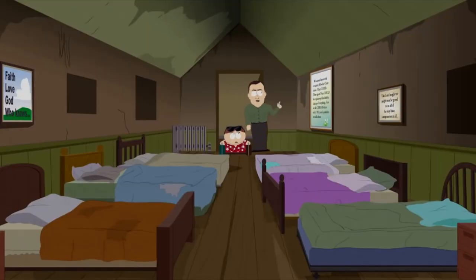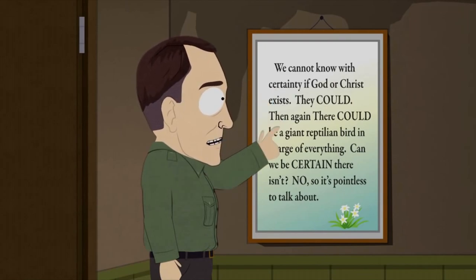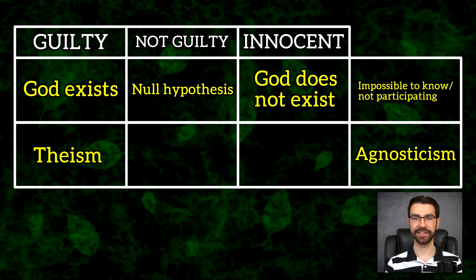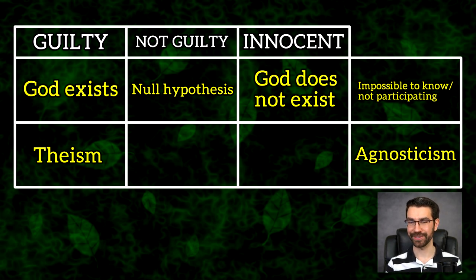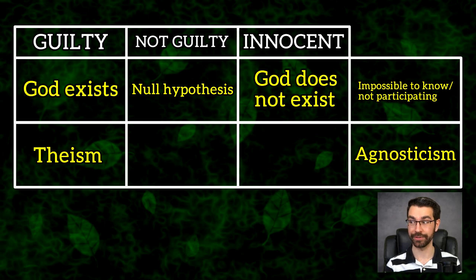[Clip]: "You will follow the agnostic code! We cannot know with certainty if God or Christ exist. They could. Then again, there could be a giant reptilian bird in charge of everything. Can we be certain there isn't? No, so it's pointless to talk about." The Stanford Encyclopedia's entry on agnosticism acknowledges the use of this term both as a proposition and as a psychological state of not knowing.